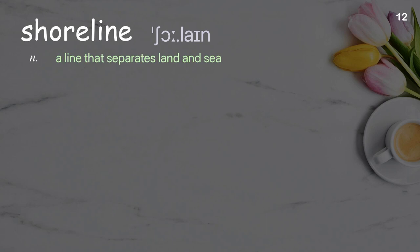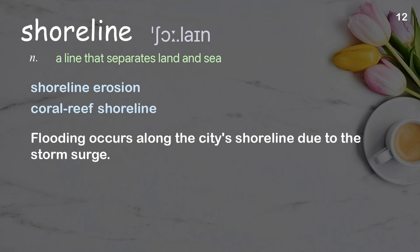Shoreline: a line that separates land and sea. Examples: shoreline erosion, coral reef shoreline. Flooding occurs along the city's shoreline due to the storm surge.